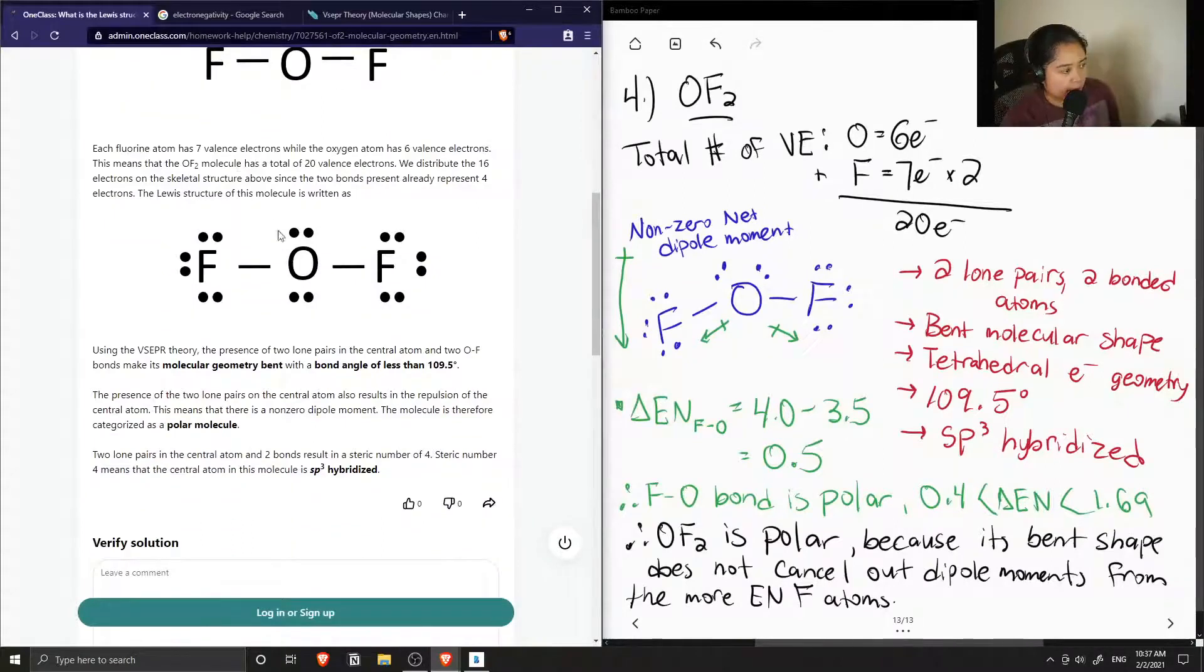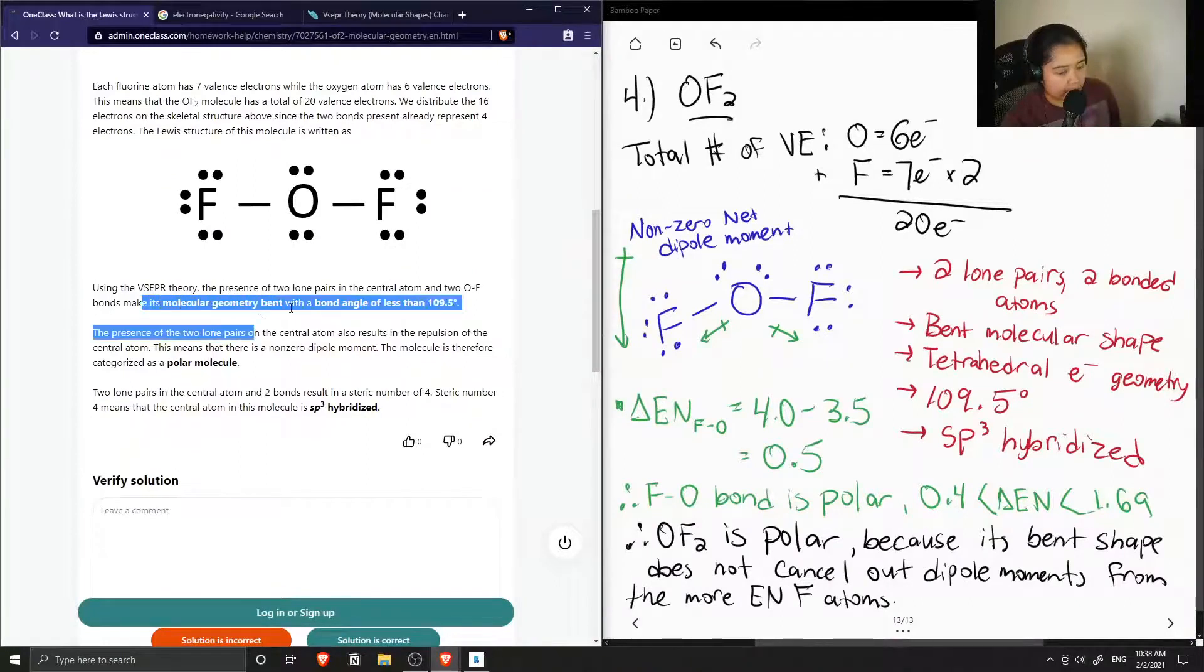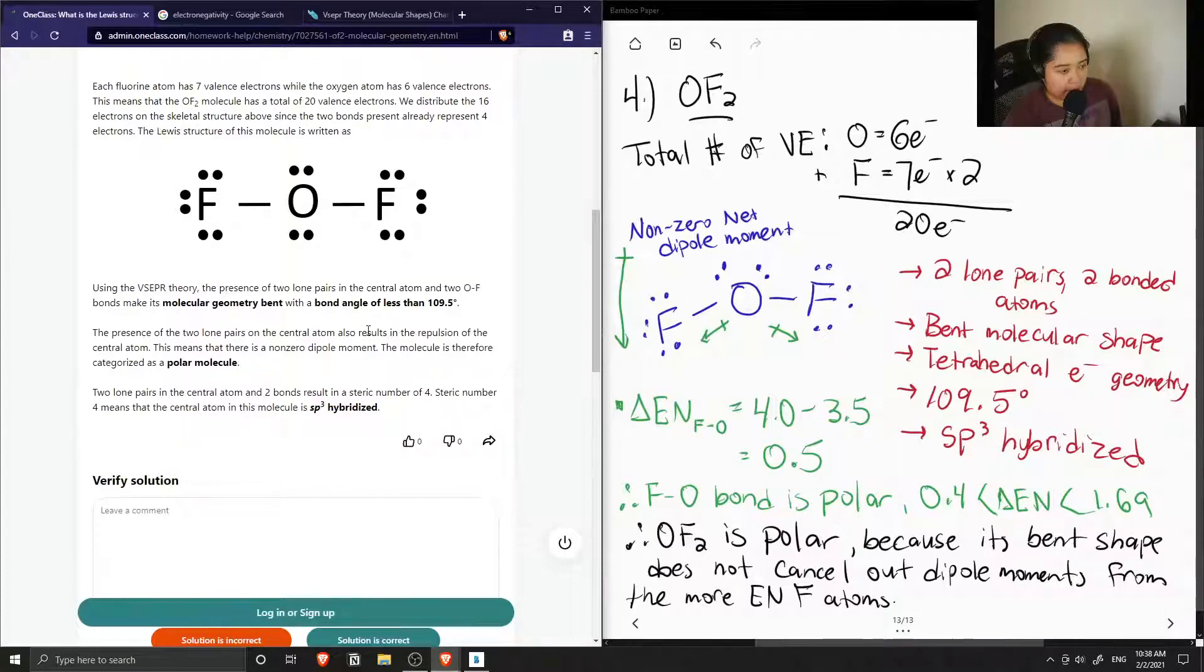They have the correct Lewis structure, and using VSEPR they see that the molecular geometry is bent. The bond angles are less than 109.5 degrees. The presence of the two lone pairs also results in repulsion of the central atom. This means there is a non-zero dipole moment, so the molecule is categorized as polar. Two lone pairs in the central atom and two bonds results in a steric number of four, so this means it is sp3 hybridized.